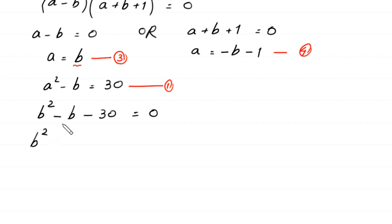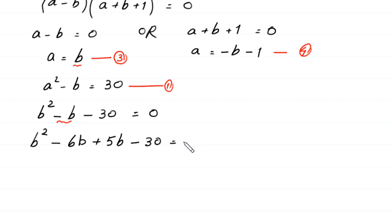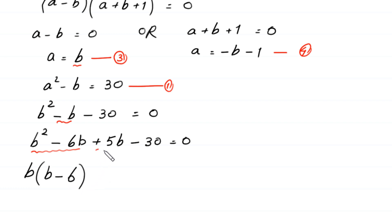We split negative b as negative 6b plus 5b: b squared minus 6b plus 5b minus 30 equals 0. Factoring the first two terms gives b(b minus 6), and factoring the last two terms gives 5(b minus 6), so (b minus 6)(b plus 5) equals 0.